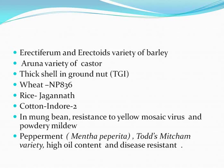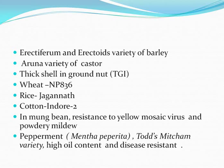Further examples from mutation breeding include Erectiferum and Erectoids varieties of barley, Aruna variety of castor, thick shell in groundnut, wheat variety NPA-36, Jagannath variety in rice, Indo-2 variety of cotton, and in moong bean, resistance to yellow mosaic virus and powdery mildew. In peppermint, the Toth's Misham variety with high oil content and disease resistance has been produced.